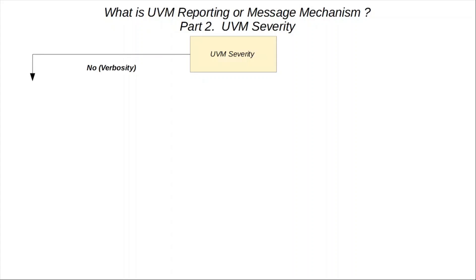When we talk about severity, we are talking about the kinds of UVM messages. There are four types: UVM_FATAL, UVM_ERROR, UVM_WARNING, and UVM_INFO. The messages are further divided based on whether verbosity is applicable to them or not. In the case of UVM_FATAL, verbosity is not applicable — it is not a required argument.